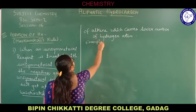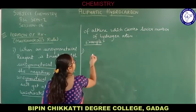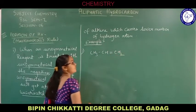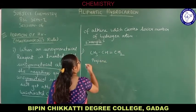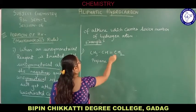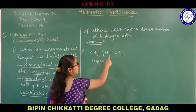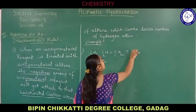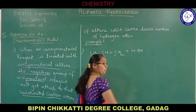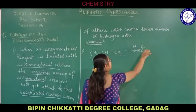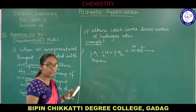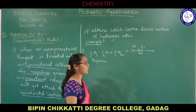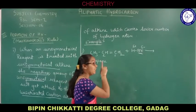Example number one: we will take the alkene called propene, which is prop-1-ene, because the double bond is present between carbon number one and carbon number two. When this unsymmetrical alkene is treated with unsymmetrical reagent hydrogen bromide — where hydrogen carries partial positive charge and bromide carries partial negative charge — according to Markovnikov's rule, the negative terminal will attach to the carbon with lesser hydrogen atoms.